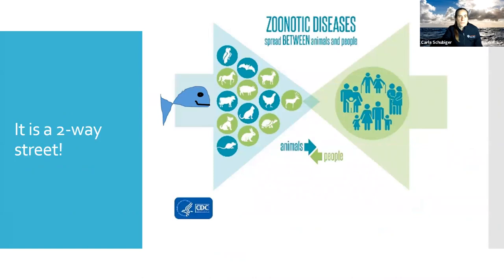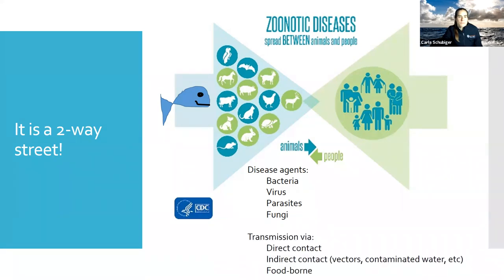In a shared world, we don't only share the environment, but we also share diseases. Diseases that are transferable between humans and animals are called zoonotic diseases, and the agents can be bacteria, viruses, parasites, or fungal agents. We can transmit, but also contract them by direct or indirect contact, or also via food.